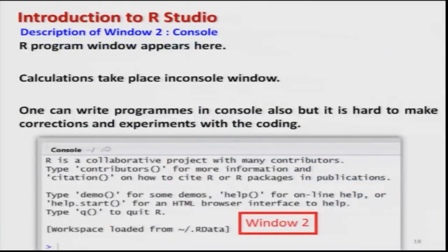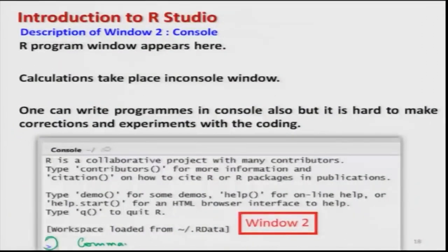Window 2 is the console window — also simply called console. Console is what we earlier called the R graphical user interface or R GUI window. This is the same place where you write commands — what was earlier called the command line. The difference now is that you need not type commands on the command line; you can write them in the script window and directly run them. You can still write directly on the command line inside RStudio if you want, but that is not really needed.